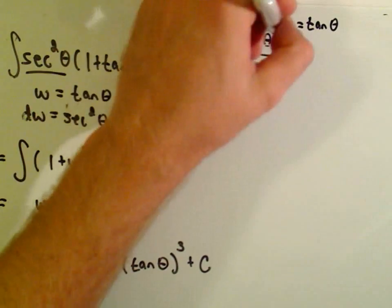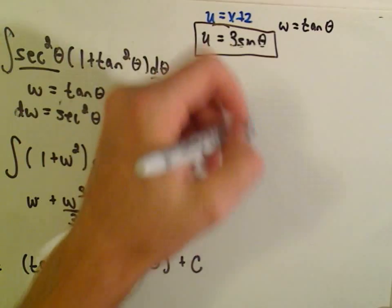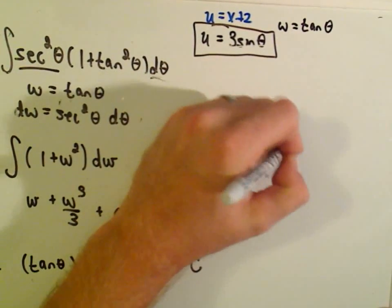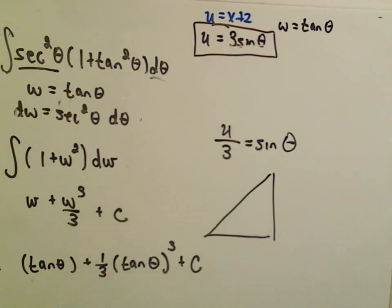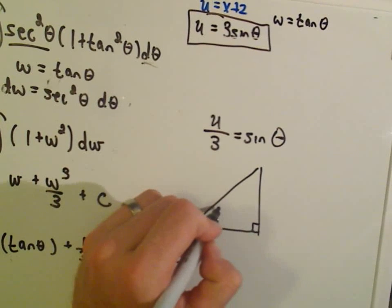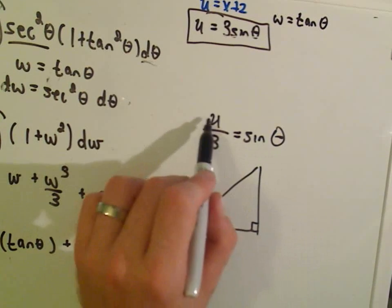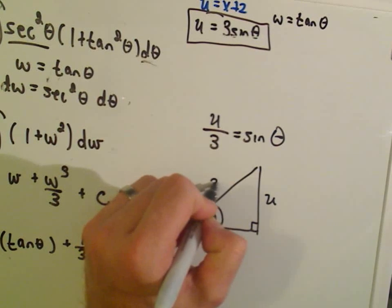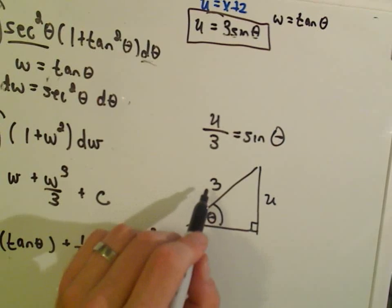What we have to do now is use our substitution u equals 3 sine theta to make a little right triangle. So we can write u over 3 equals sine theta, and now we can make a right triangle based on this. Remember, sine is opposite over hypotenuse — so the opposite side is u and the hypotenuse is 3.